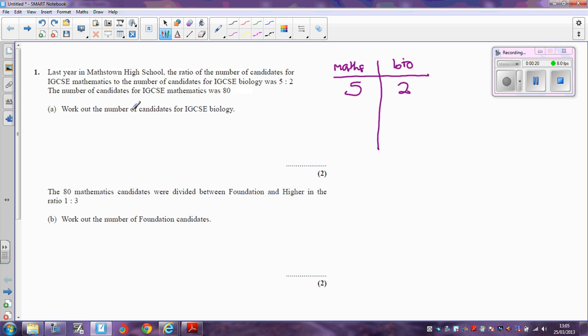The question says that the number of candidates for maths was 80. So if you've got 80 students here, the problem is how many students are you going to have here? I think, if I multiply the number of maths students by something, I will get 80. What do I have to multiply 5 by to get 80? It doesn't take long to realize that it's 16.